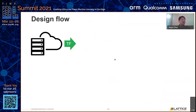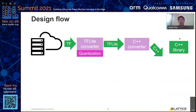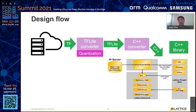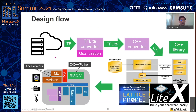The design flow is quite straightforward. It starts from general TensorFlow training on a GPU machine. Then we convert those models using the TensorFlow Lite converter from Google. We use post-training quantization, and then it becomes TensorFlow Lite, converted into C++ form. We use the C++ library for TensorFlow Lite, and then it maps to the SoC system. We have our own tool called Radiant Propel that generates the SoC, or you can use LiteX, an open-source tool. Both basically generate the SoC system.